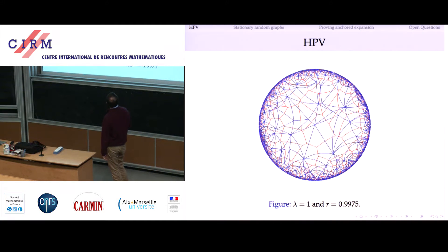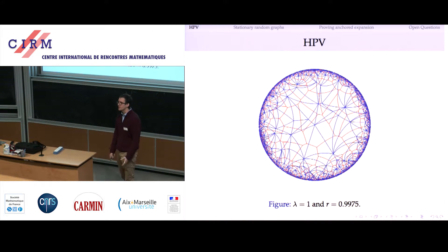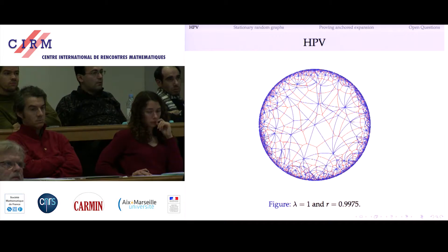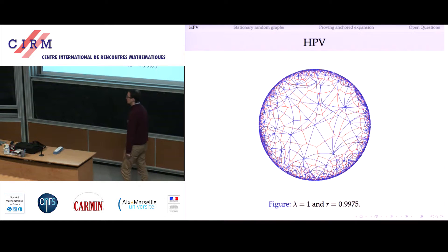Here is lambda equals one. One thing you could keep track of is the average degree. The average degree of the blue graph should converge to six, which is what it has to be for an infinite Euclidean tessellation — a triangulation.